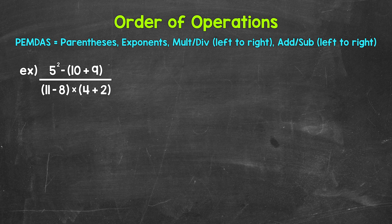Now let's start with the top, and we will work to the side here. So do we have any parentheses? Yes. So let's start there. We have 10 plus 9 in parentheses, which is 19. So we have 5 squared, minus 19.